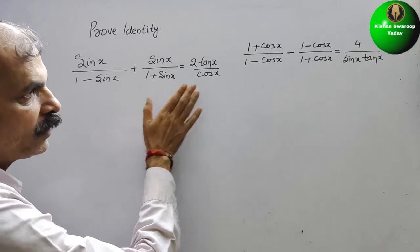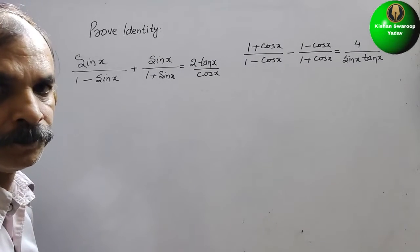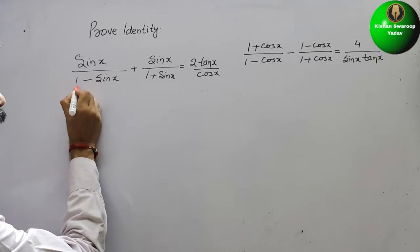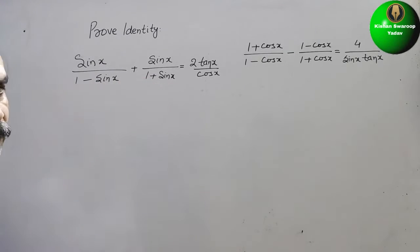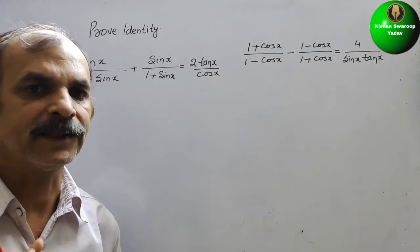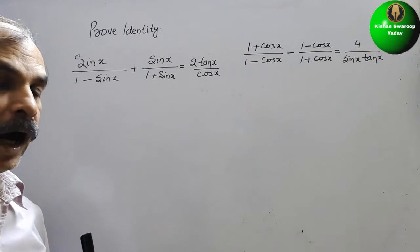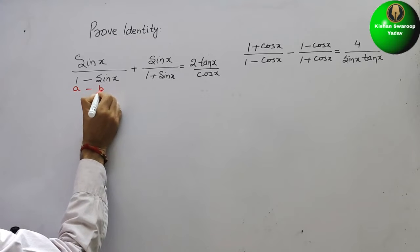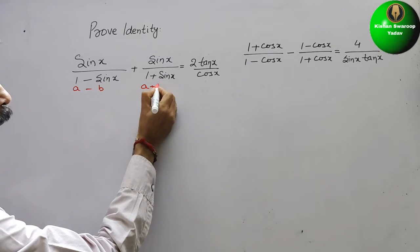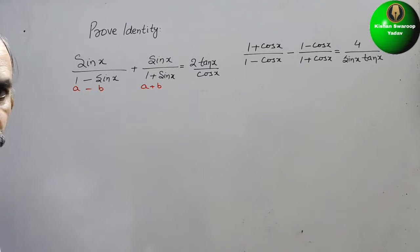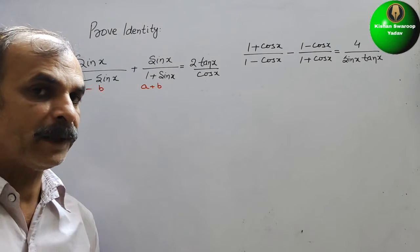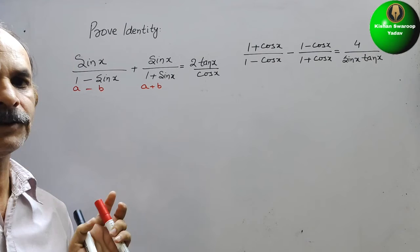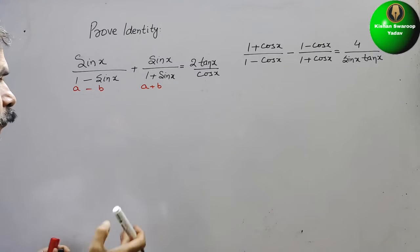First we will solve the left-hand side. If you see the denominators, they are different, so we have to take the LCM. The denominators are in the form of (a - b) and (a + b), and we know that (a - b)(a + b) = a² - b². So that is what we have to write here.